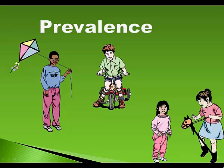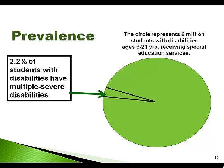Prevalence of multiple and severe disabilities is not easily determined. A very small percentage of students out of the 6 million students with disabilities ages 6 to 21 have multiple severe disabilities. The prevalence is 2.2% of the students who receive special education services ages 6 to 21. In 2005, out of the whole school population, less than 0.22% have multiple and severe disabilities. Note that this figure does not include infants, toddlers, and preschoolers with multiple and severe disabilities.